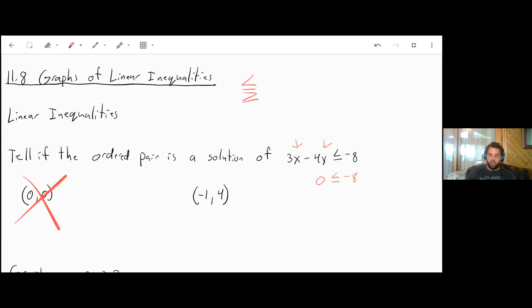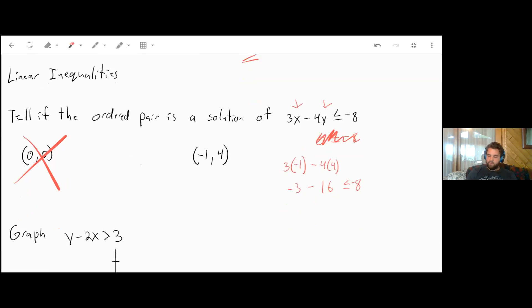Now let's try (-1, 4). Plug in -1 for x. 3 times -1 is -3. Then plug in 4 for y. 4 times 4 is 16. Our question is, is -3 minus 16 less than or equal to -8? Well, -3 minus 16 gives us -19. Is that less than or equal to -8? Yes, it is indeed less than -8.